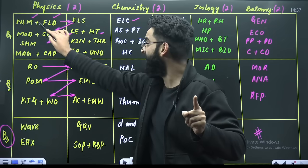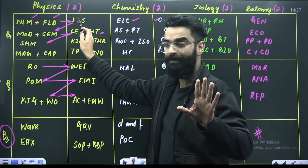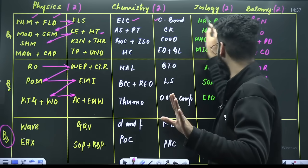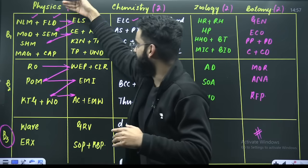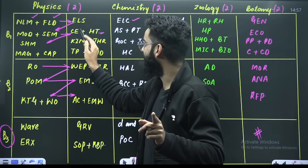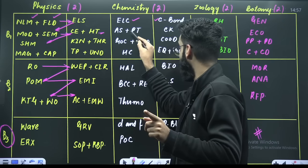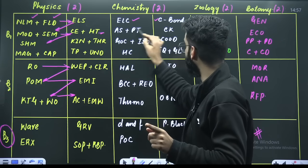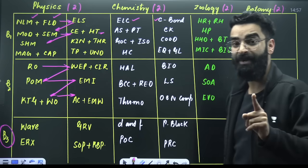I hope you got the sequence: NLM, fluids, then electrostatics, then do the equations of these. Similarly chemistry — these two: complete their theory, then complete their equations. Similarly zoology and botany — these two: complete the theory, then do the equations. Then you can move to the second row: modern physics and semiconductors — theory; then capacitors and heat transfer — theory, then do their equations. Similarly in chemistry: atomic structure, periodic table, chemical kinetics, fused with chemical kinetics — these two. Then do their equations. Row by row you have to complete.